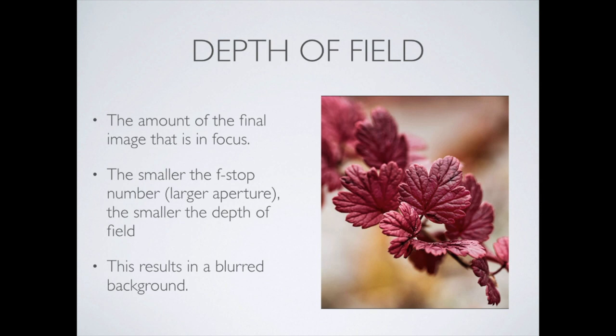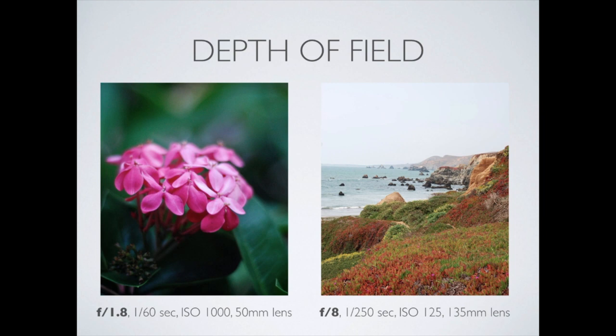It results in a blurred background, essentially. Here's two examples. The first one is f1.8, so it's a very big aperture — a lot of light coming into the camera. One-sixtieth of a second in exposure, the ISO is at a thousand, and it's a 50 millimeter lens. We can see that really just the edges of these flower petals right in here are in focus, and everything behind and everything in front is blurred out. So we're controlling what somebody's looking at by blurring out the background.